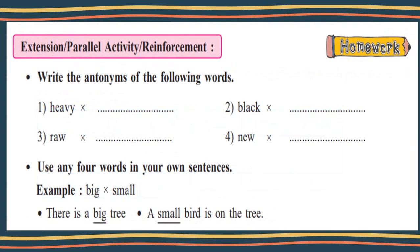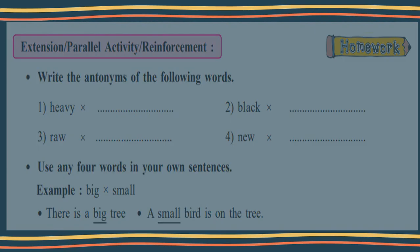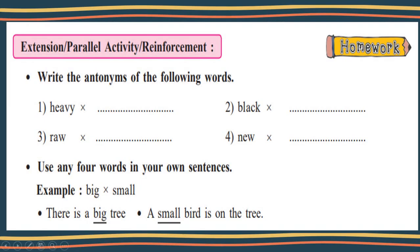And see, here is given homework, extension or parallel activity. Write the antonym of the following words: heavy, raw, black and new. So write here: heavy, light. Black, white. Raw, cooked. And new, old. And see, here is given one. Use any four words in your own sentence. Example, big, opposite word of big is small. And see, here are given or just framed sentences. There is a big tree, and a small bird is on the tree.